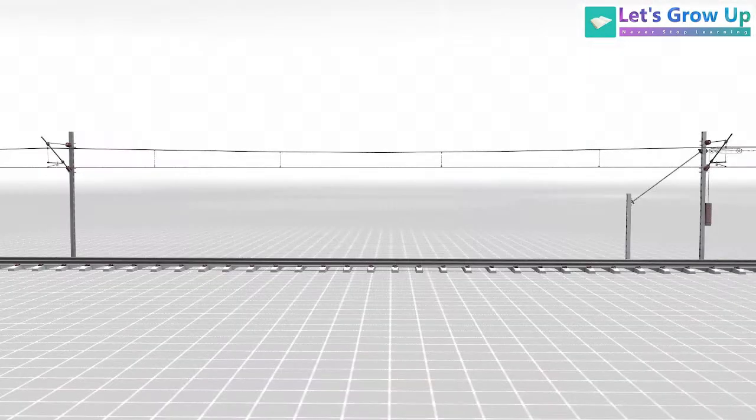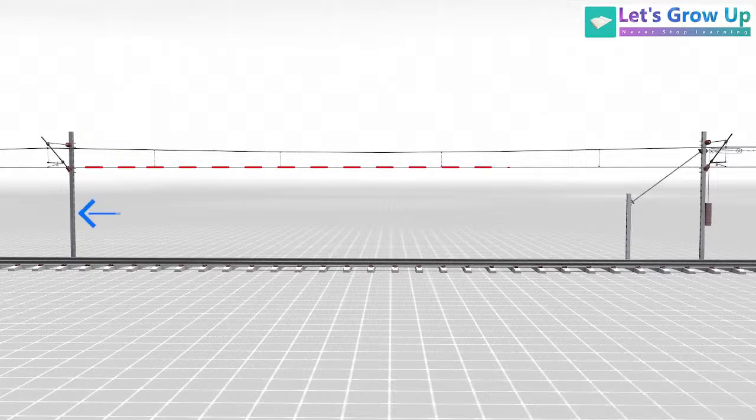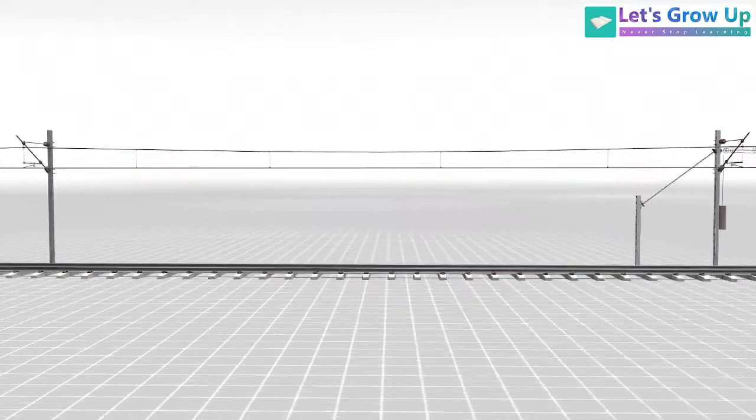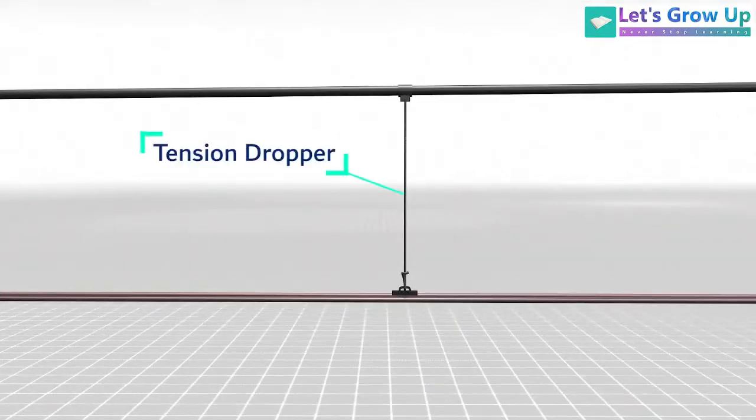The maintenance of the correct height and tension of the contact wire over longer distances can present challenges. That's why tension droppers, also known as tensioning devices, are employed to address these challenges and ensure proper contact with the pantograph.